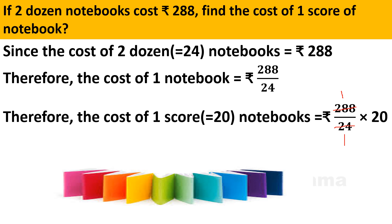Solving: 24 ones are 24, and 24 ones are 24 again. Remainder 4 and 8 gives 48, and 24 twos are 48. So the result is 12, multiplied by 20, giving Rs. 240. The cost of 20 notebooks — or the cost of one score of notebooks — is Rs. 240.